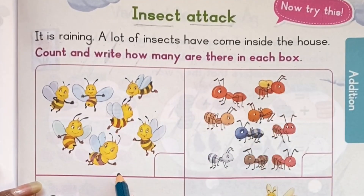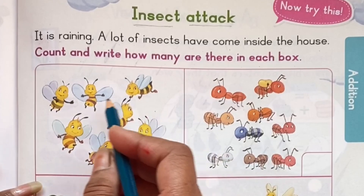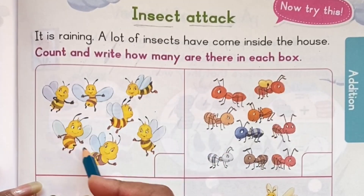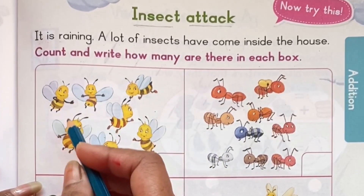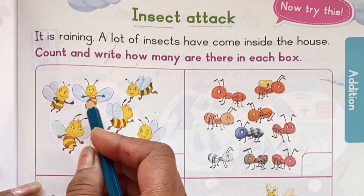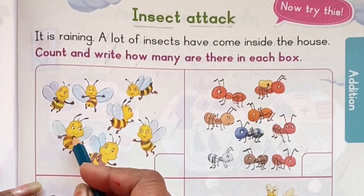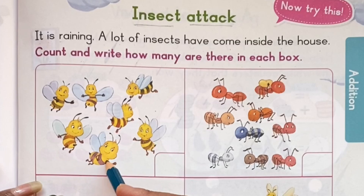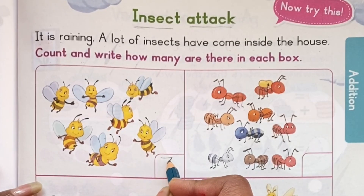See the first box. What do we see here? We can see bees. How many bees do we see here? Let's count. 1, 2, 3, 4, 5, 6, 7. 7 bees.